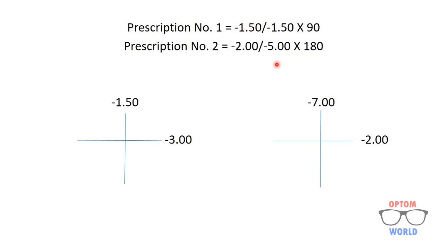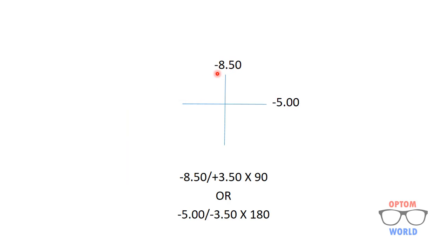For prescription two the optical cross gives minus two at 180 and, adding minus five moving towards more negative, we get minus seven. Adding the two optical crosses: minus one point five and minus seven gives minus eight point five, and minus three and minus two gives minus five. So the net optical cross is minus eight point five zero at 90 degrees and minus five at 180 degrees.